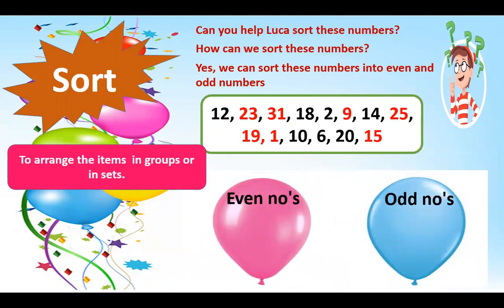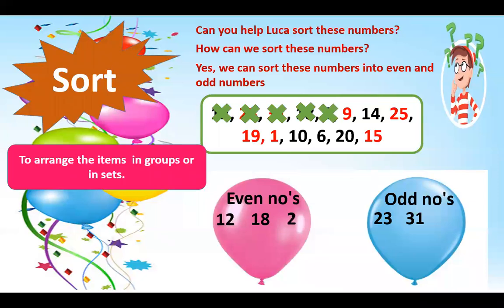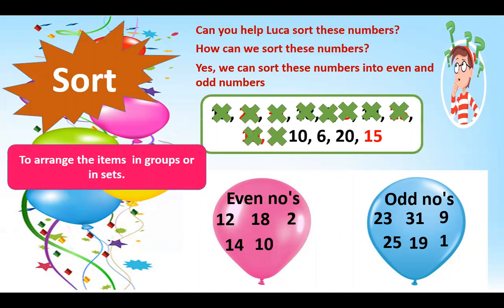The first number, 12, is an even number. 23 is an odd number. 31 is also odd. 18 is even, 2 is even, 9 is odd, 14 is an even number. 25 is odd, 19 is an odd number. 10 is even, 6 is even, 20 is even, and the last, 15, is an odd number.